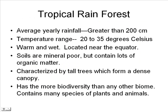Deserts have few plants, although cacti are fairly common. Typical desert animals include jackrabbits, snakes, lizards, and small rodents. The tropical rainforest has an average yearly rainfall of greater than 200 centimeters and a temperature range of 20 to 35 degrees Celsius, making it warm and wet.